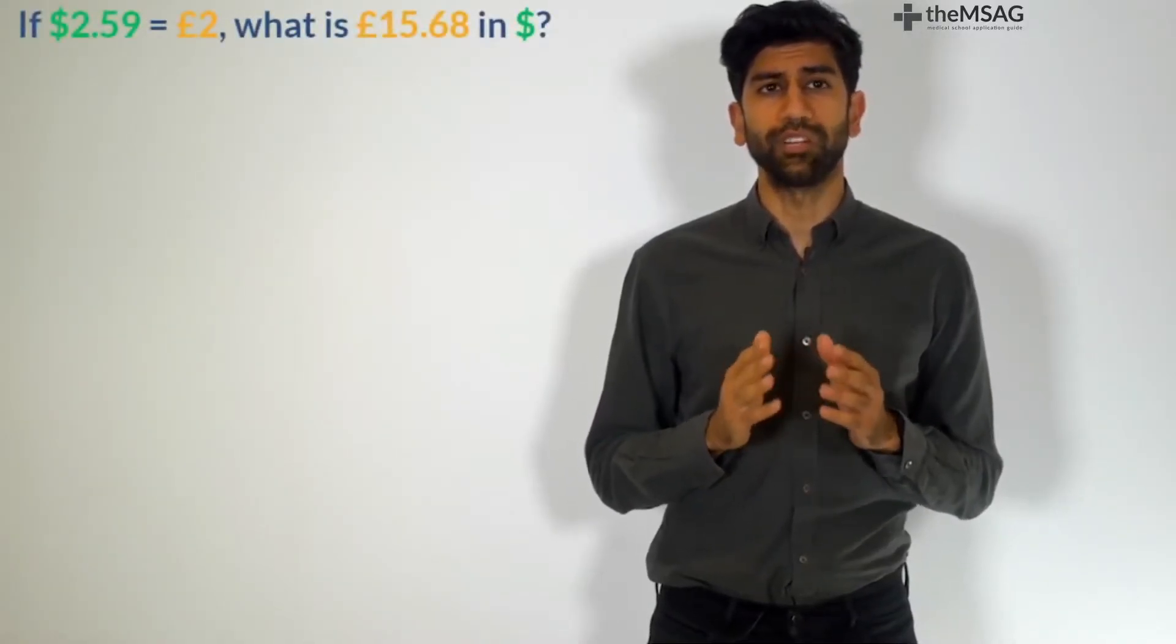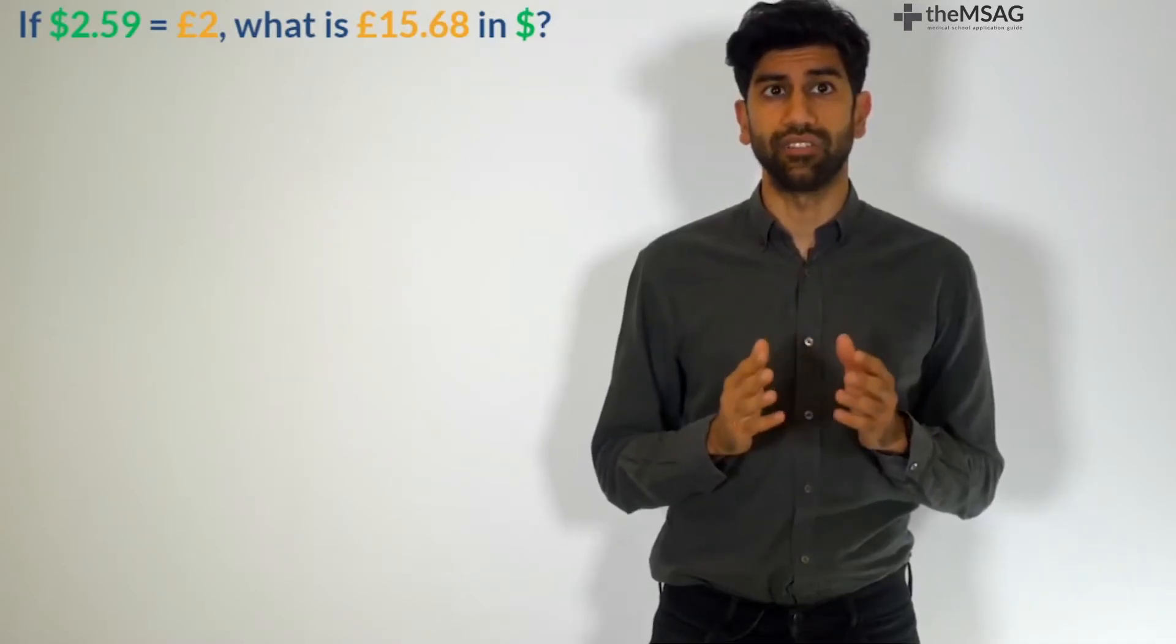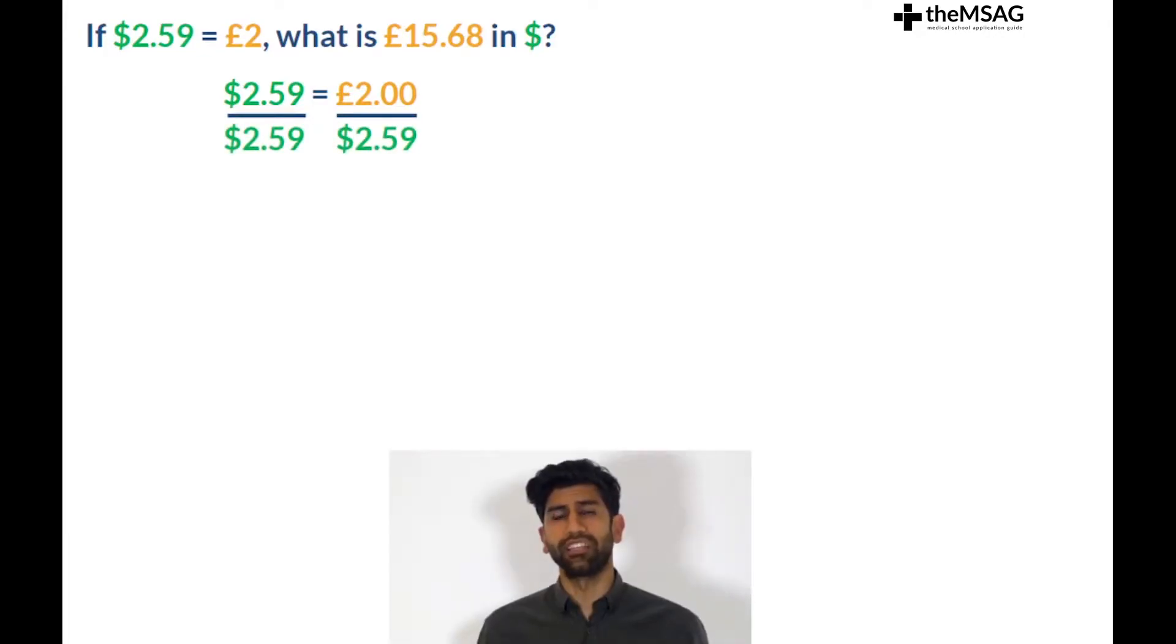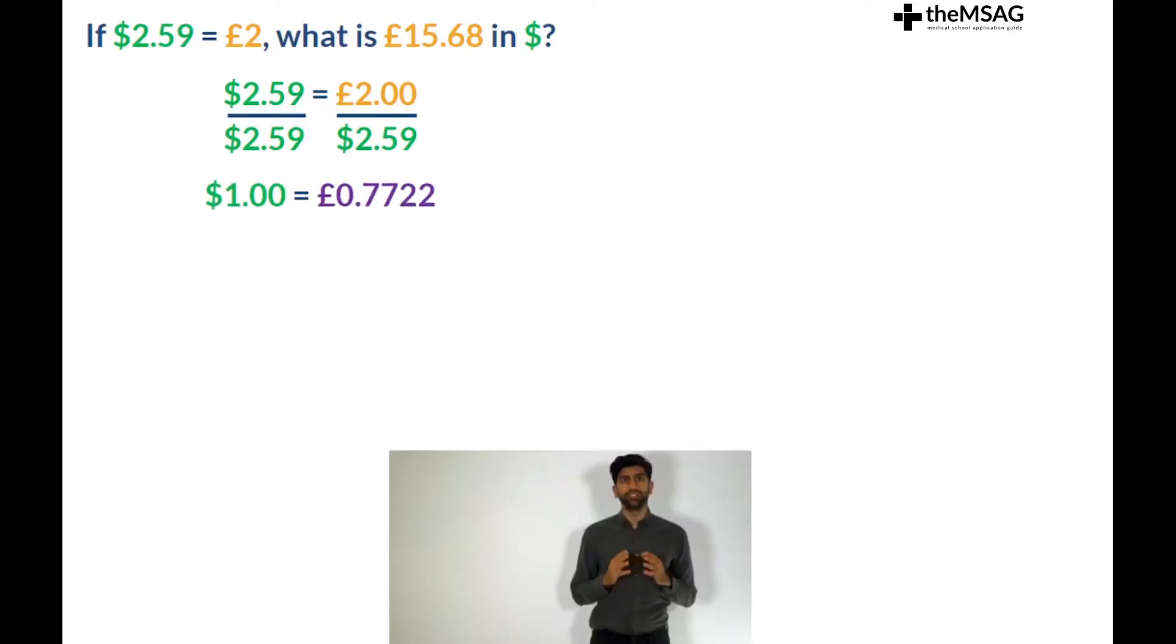Let's give you an example to practice right now. If $2.59 equals £2 what is £15.68 in dollars? We can keep the conversion in the same order as given. $2.59 equals £2. Divide both sides by 2.59. $1 equals 0.7722 pounds. Don't round too much as we want our answer to be quite accurate.